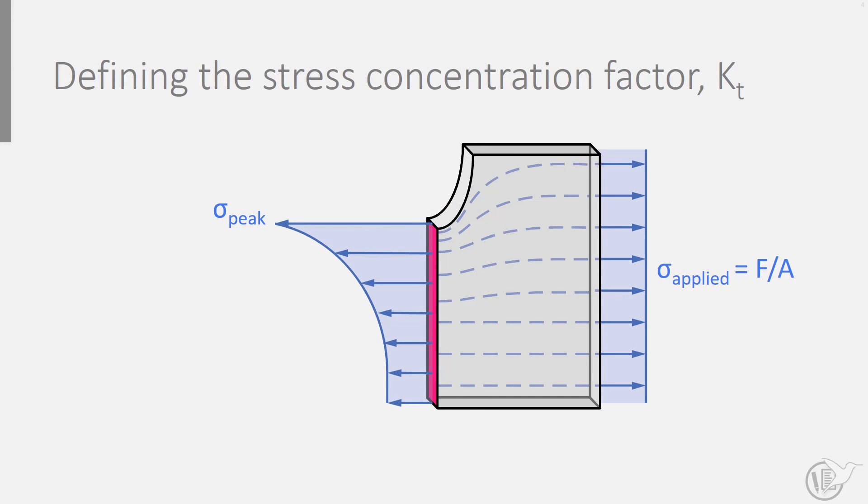This concentration of stress is captured with the stress concentration factor, indicated by the parameter Kt. This factor Kt is defined as the ratio of peak stress at the notch root divided by the average nominal stress in the reduced cross-section. The higher the peak stress and the steeper the gradient, the higher the stress concentration is.